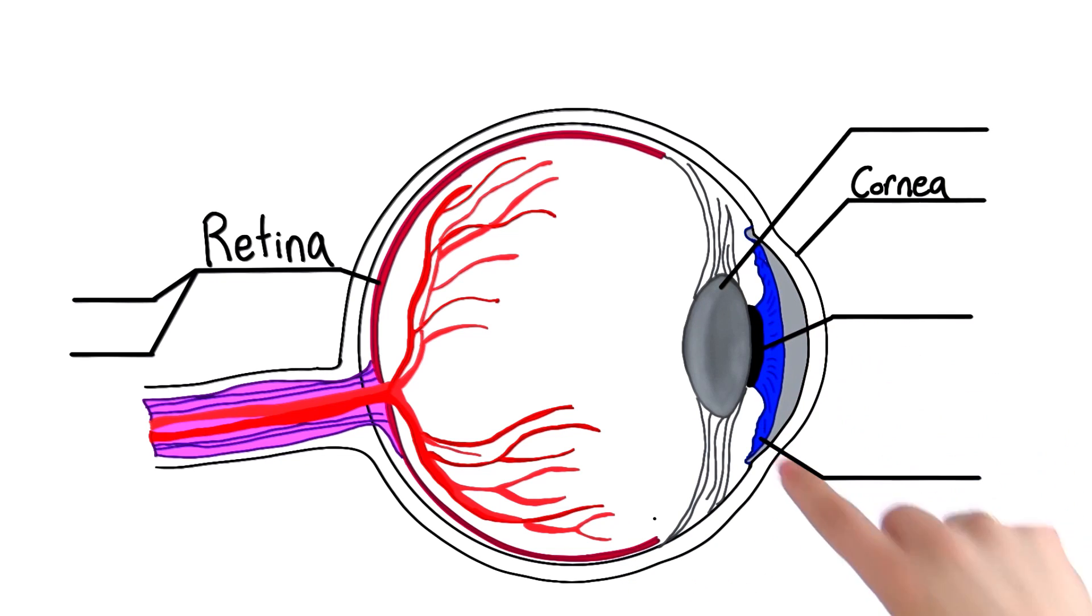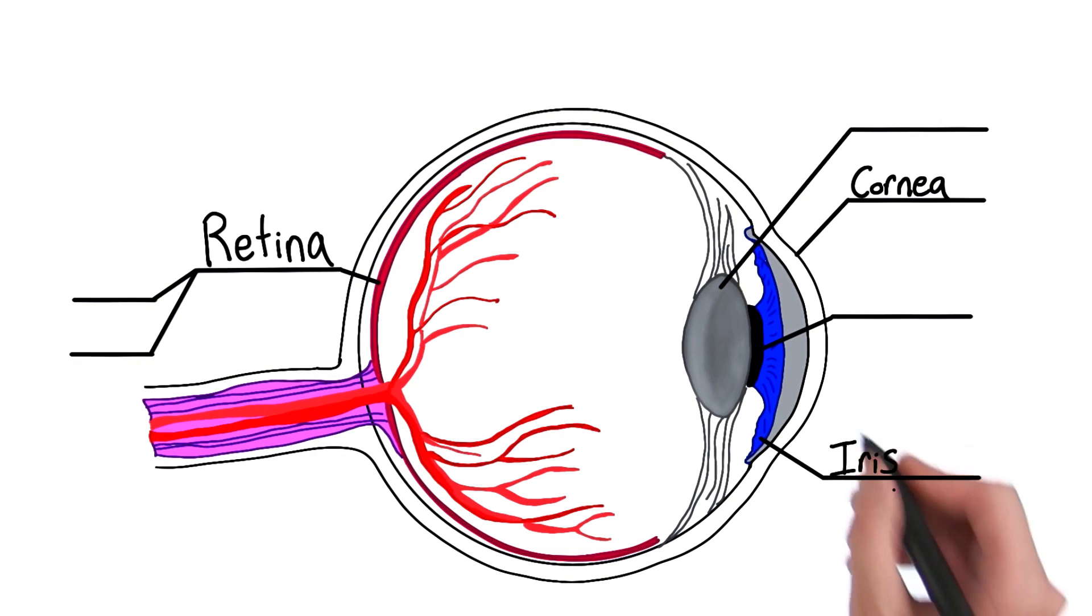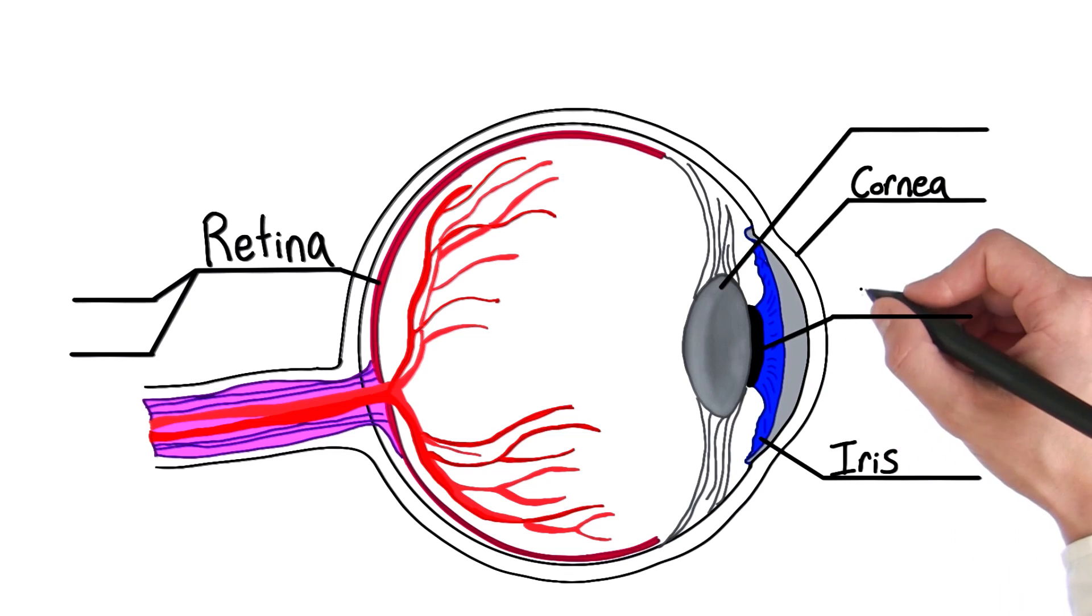And how about the blue part here? Well, that's the colored part of our eye. That's called the iris. And in addition to being very pretty, it's a muscle that constricts or dilates to change the amount of light that's let in through this guy here. And that's called the pupil.